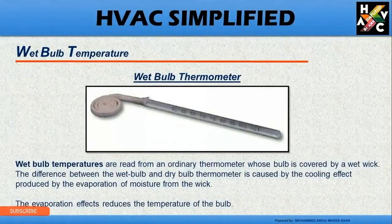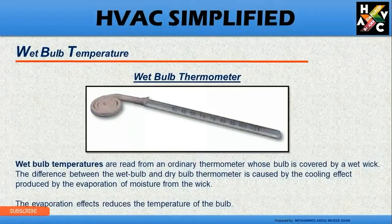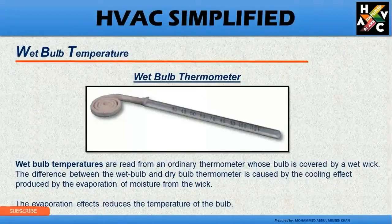Wet bulb temperature. The wet bulb temperature is read from any ordinary thermometer whose bulb is covered by a wet wick. The difference between the wet bulb and dry bulb temperature is caused by the cooling effect produced by the evaporation of moisture from the wick. The evaporation effects reduce the temperature of the wet bulb, and this temperature due to evaporation of moisture from the wet wick is known as wet bulb temperature.